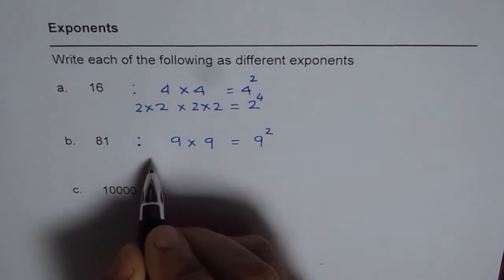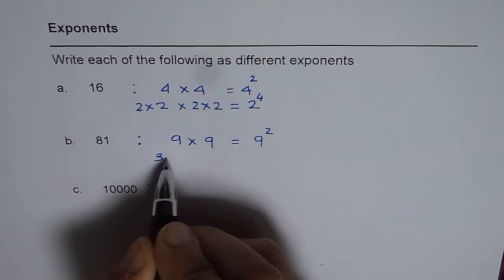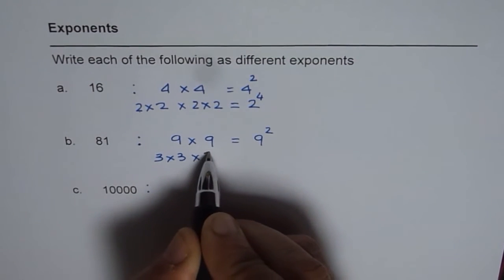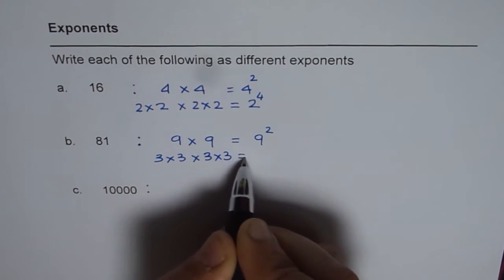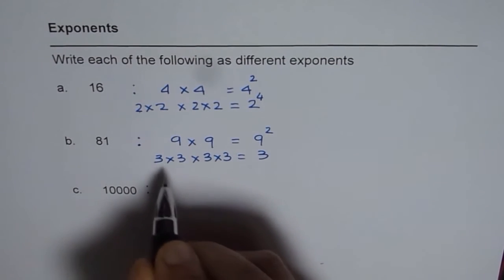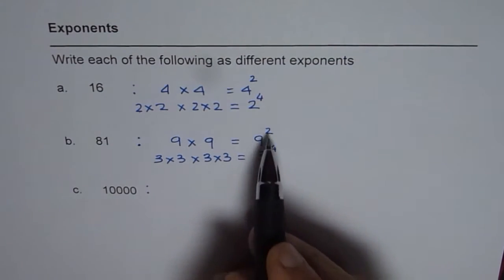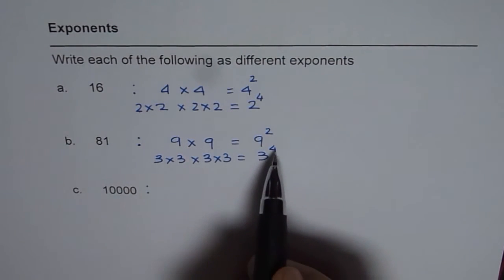And 9 can be written as 3 squared, so that means 3 times 3. And then 9 as 3 squared, 3 times 3. So what do we get? We get 3 to the power of 1, 2, 3, 4. So 81 can be written as 9 squared or 3 to the power of 4.